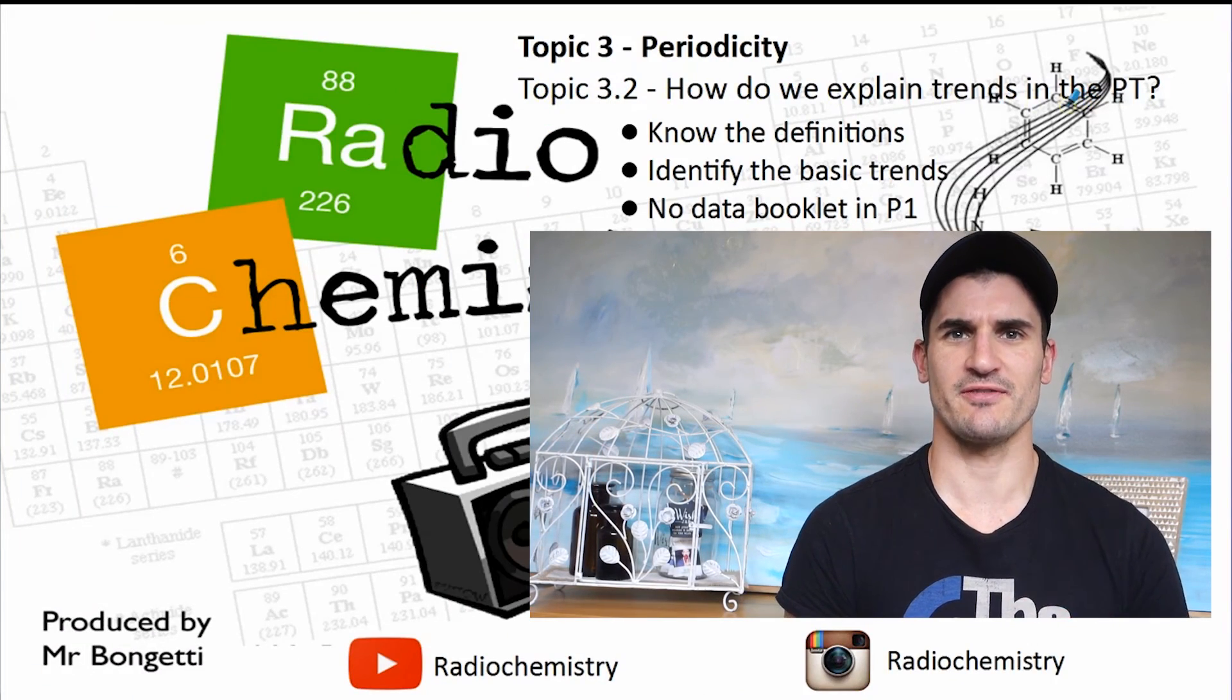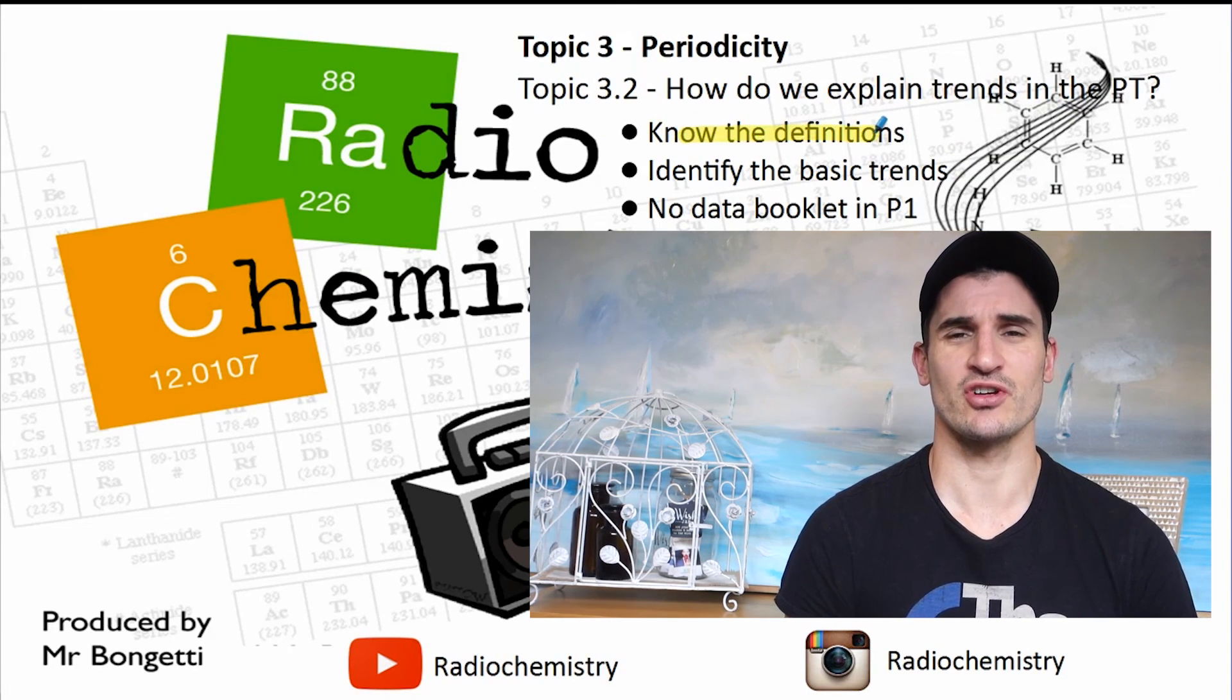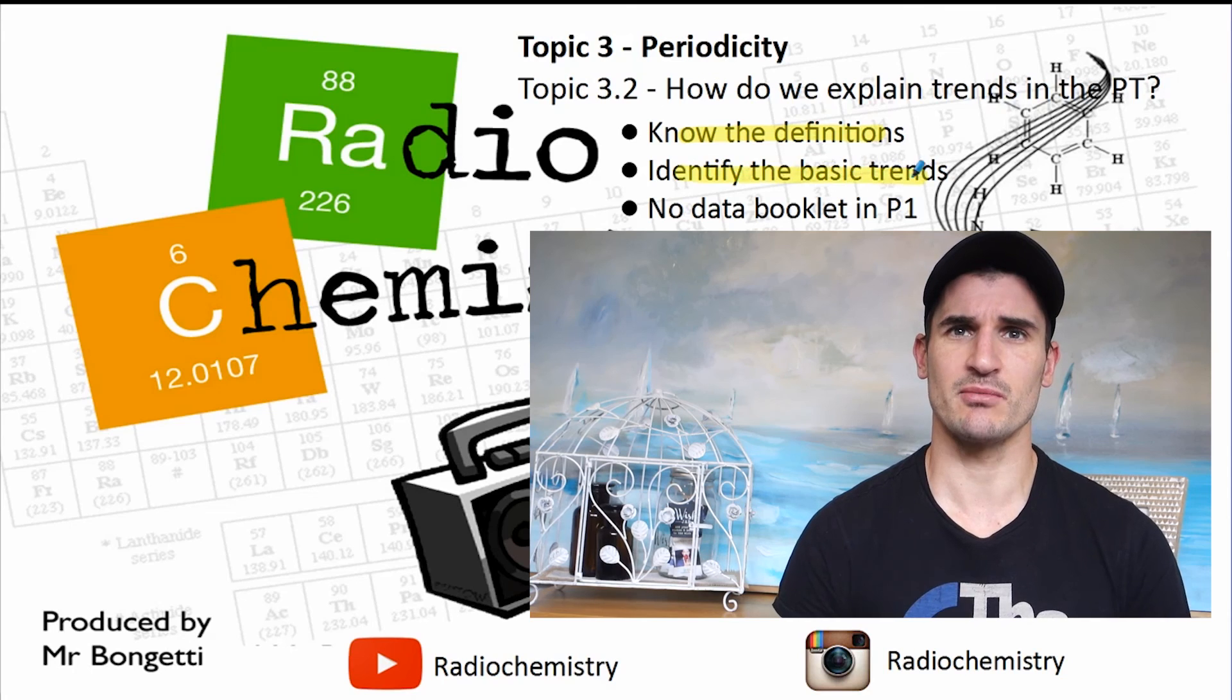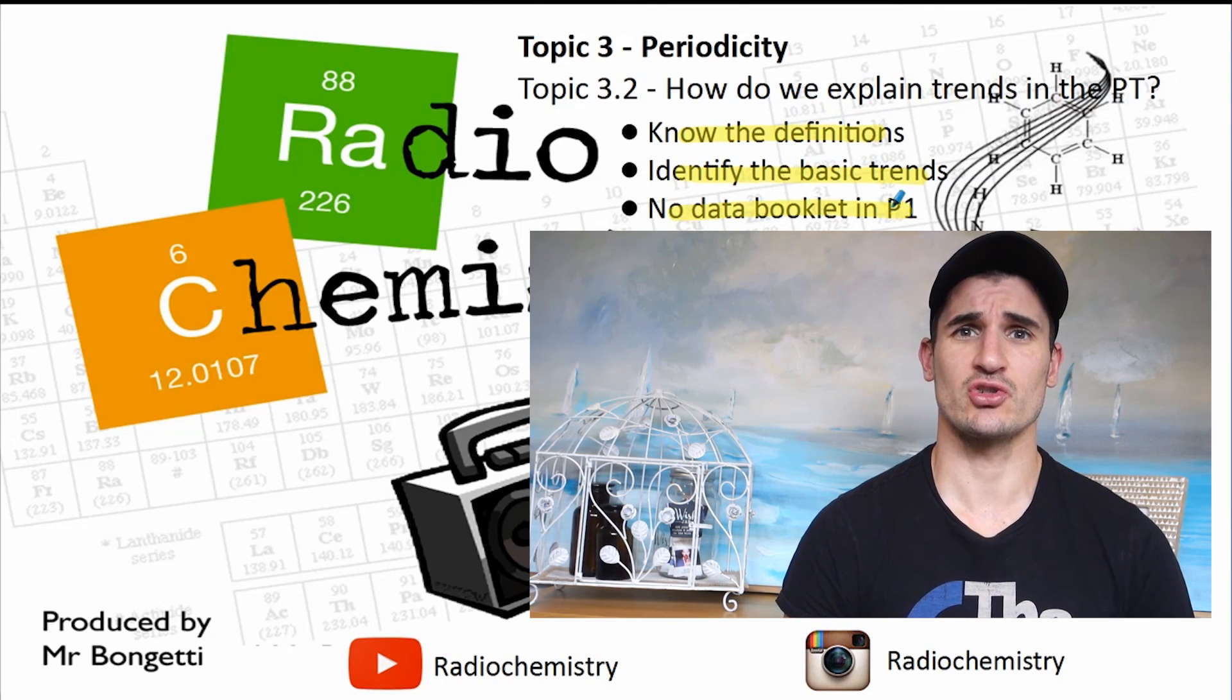Topic 3.2, some top tips. Make sure you know the definitions pretty much word for word. Make sure you can identify the basic trends. And remember, you don't get a data book in paper 1. So you need to make sure that you can know some of those trends. Thanks for watching, guys. Don't forget, drop a like on the video, subscribe for more, and I'll see you next time.